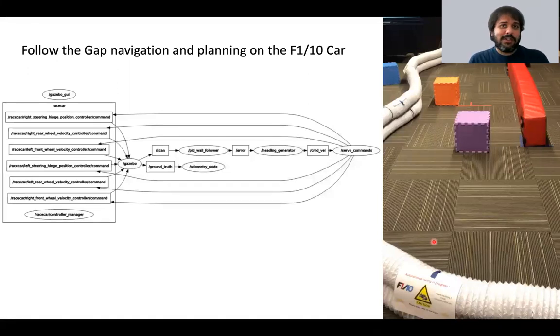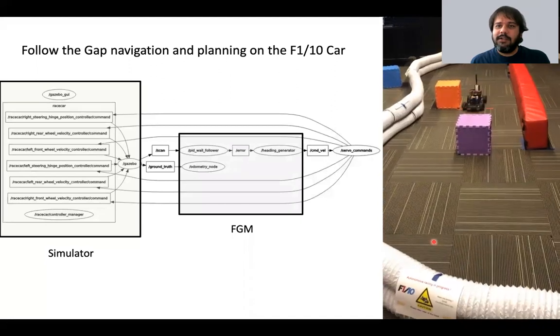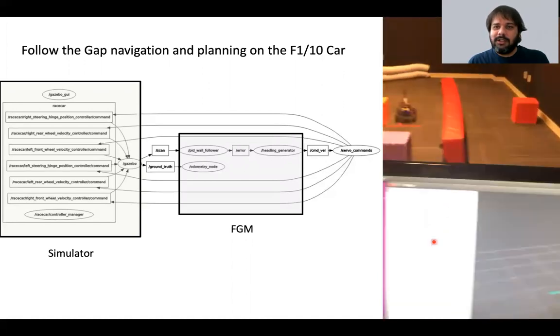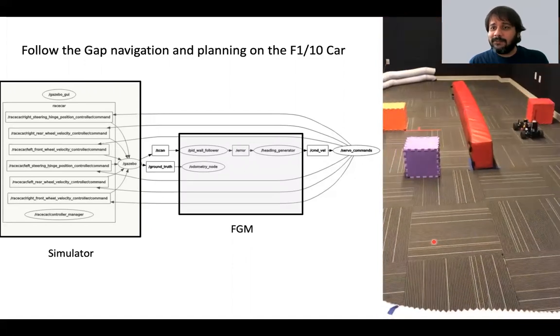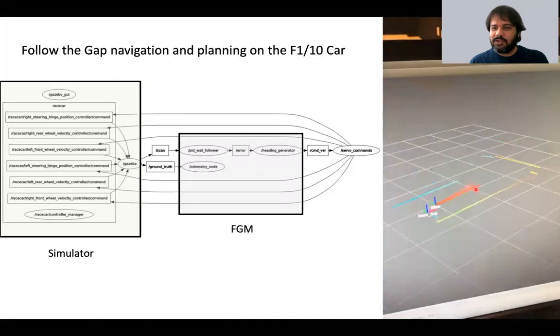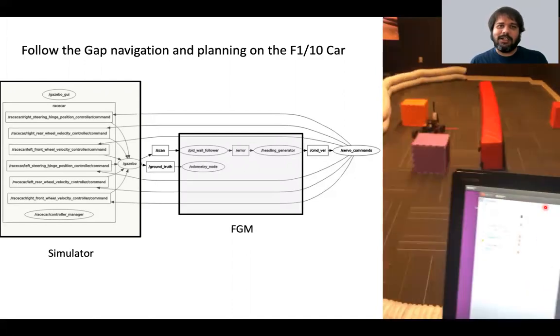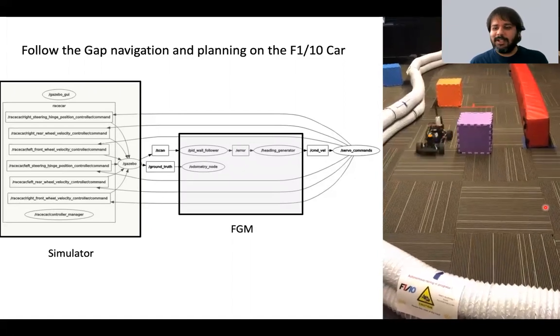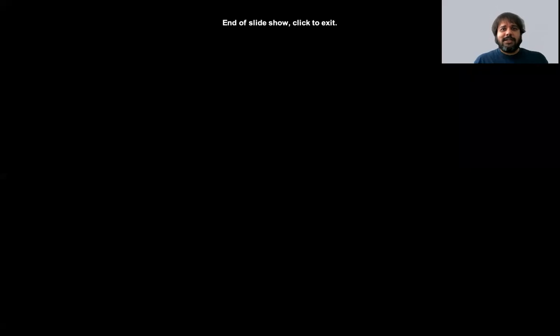This approach works in the F110 autonomous racing simulator. The Follow the Gap control node allows the car to reliably avoid foam cubes on the track. In RViz, a red arrow visualizes the direction of the largest detected gap at each timestep. In your next assignment, you will implement Follow the Gap in the F110 simulator. That's it for this video — next time we'll cover trajectory following and motion planning using pure pursuit and RRT-style algorithms.